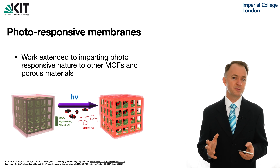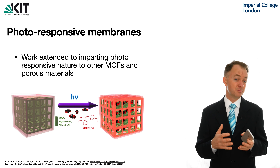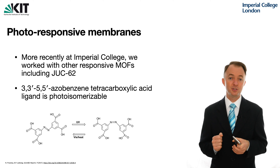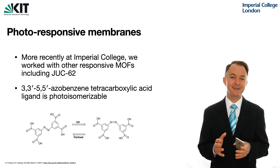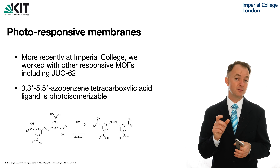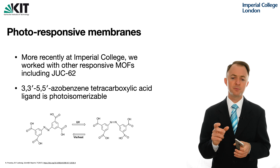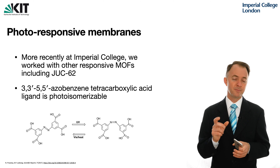So far we've only been talking about photoresponsive sorbents, and this is a membrane conference and I'm a membrane researcher. So we want to ask: how can we go from making these porous materials into photoresponsive membranes? In 2015 I moved to the Department of Chemical Engineering at Imperial College London, and while we were there we made membranes using two more recently discovered metal-organic frameworks: JUC62 and PCN250. JUC62 uses an azobenzene tetracarboxylic acid ligand, which has a nitrogen–nitrogen double bond in the middle — that's really key.